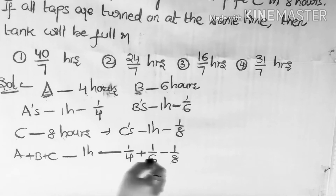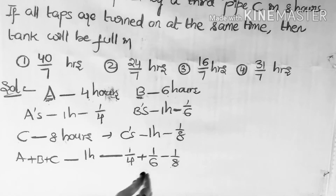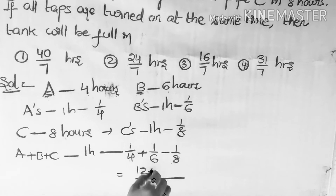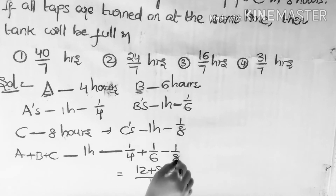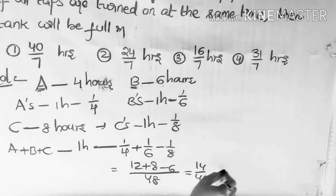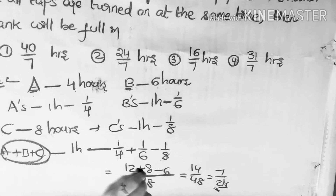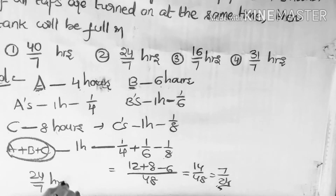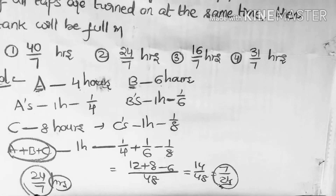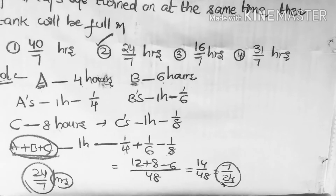Pipes A and B fill the tank but pipe C removes water, so we compute 1/4 plus 1/6 minus 1/8. Taking LCM as 48: that gives 12 plus 8 minus 6 over 48, which is 14/48, equals 7/24. So A, B, and C together can fill the tank in 24/7 hours. That is the second option.